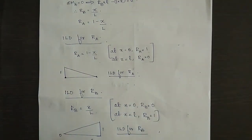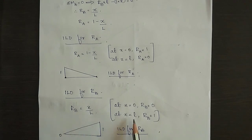Next is the ILD for RB. At X equal to 0, RB is 0, and at X equal to L, RB is 1. This gives a straight line increasing from A to B.